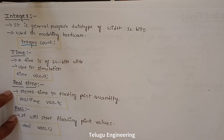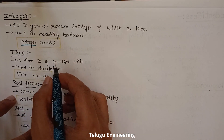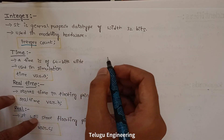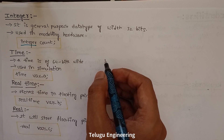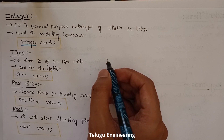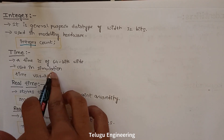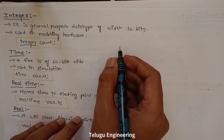Next, we have the time data type. Time is of 64 bits. We declare it using the time data type with a 64-bit size. We store the time variable in it, and we use it in simulations. This is used in your simulations — we can write test benches. Test benches are nothing but your simulation environment.